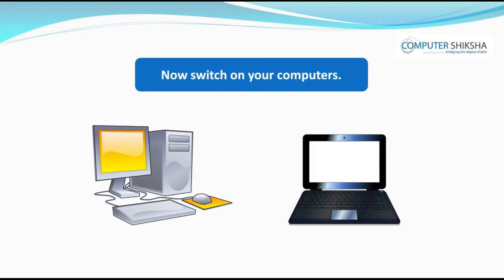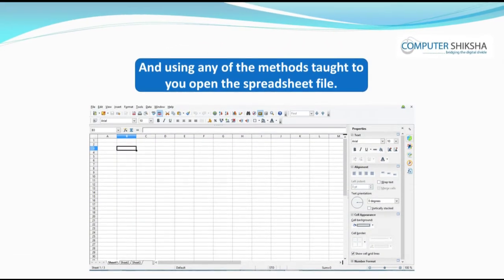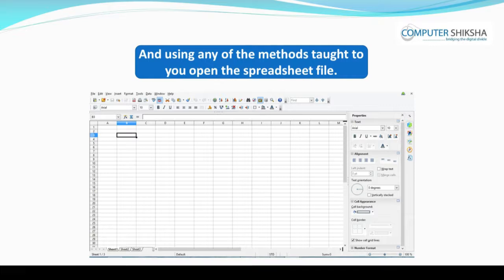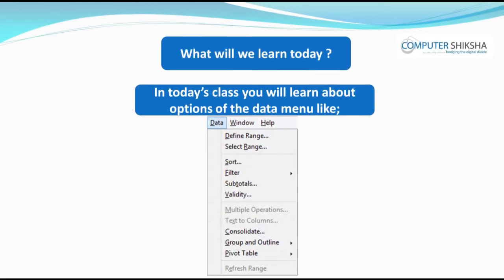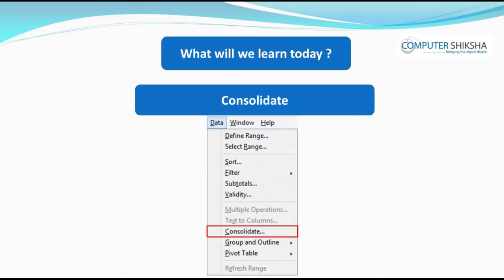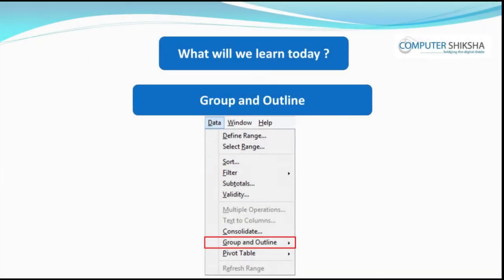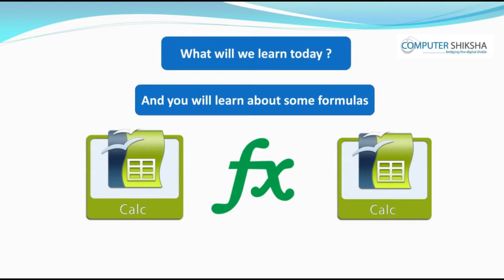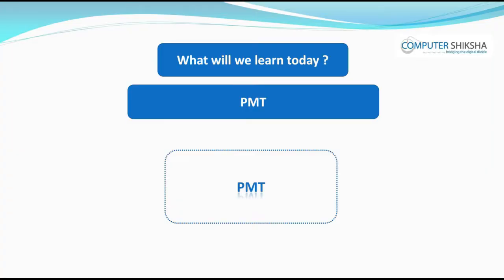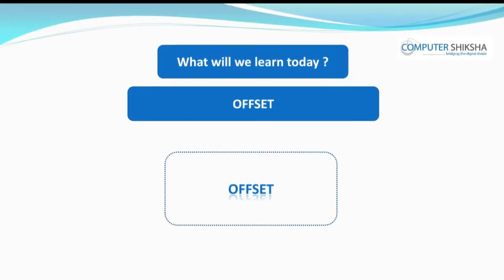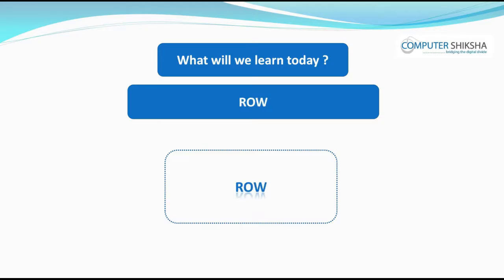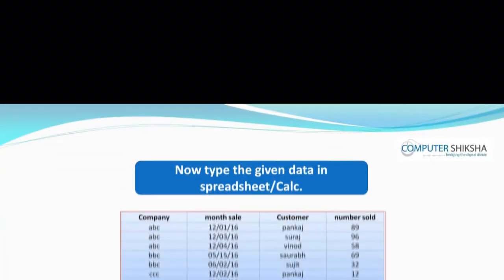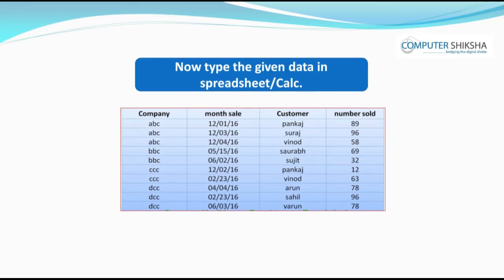Now all of you switch on your computers and open the spreadsheet or Calc file. In today's class you will learn about options of the Data menu like Consolidate, Group and Outline, and Pivot Table. Besides this, you will also learn about some formulas like PMT, IPMT, PV, NPV, FV, Offset, Column, Row, etc.